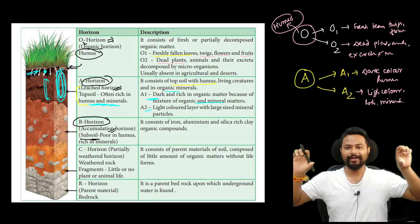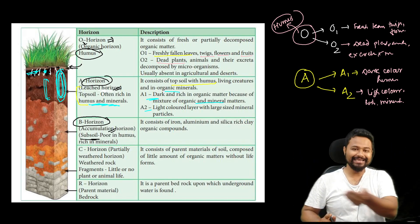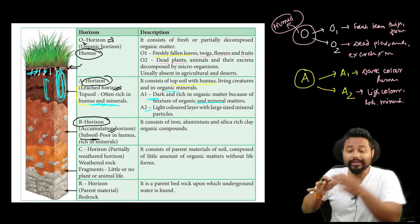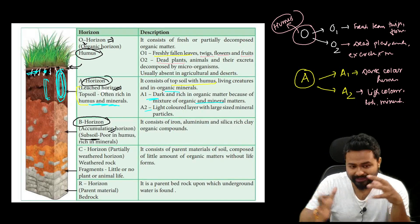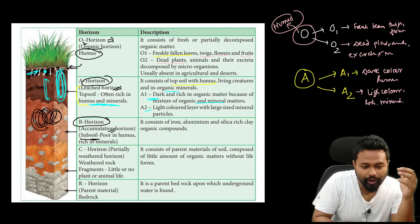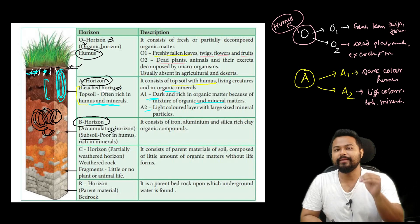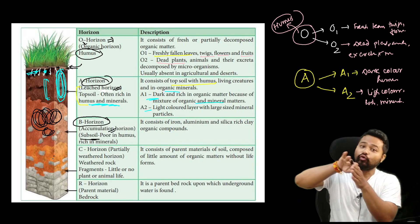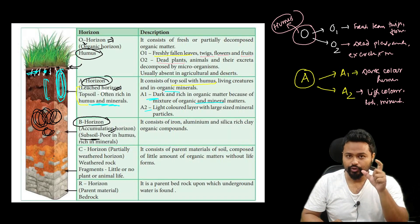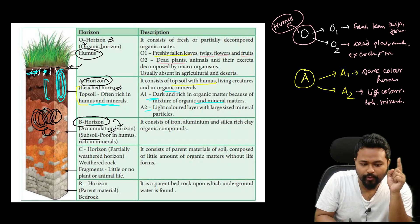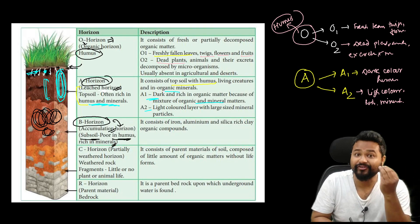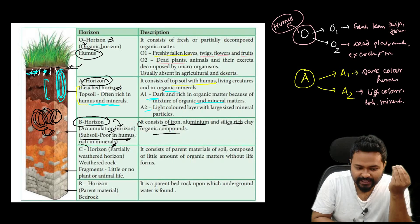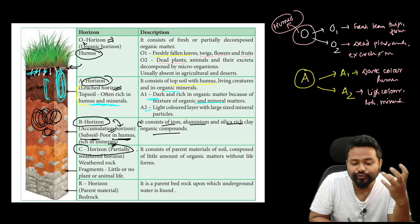The topsoil level is very important. The B horizon is the accumulation horizon — poor in humus but rich in minerals. It consists of iron, aluminum, silica-rich clay, and organic compounds. The C horizon is the partially weathered horizon.